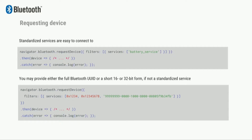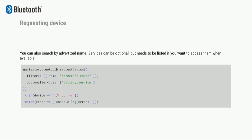Let's look at how you actually do these things. You just request a device with some filters. The GATT protocol has some predefined filters; if you make your own devices they might use a UUID instead. If the user selects one of these devices it returns a promise — you get a device, you can do something with it, or handle errors. You can also look for devices by name if they have specific names, like a small robot I made. If a device has optional services like service A and B, you need to list them as optional services.